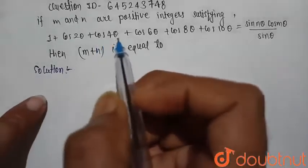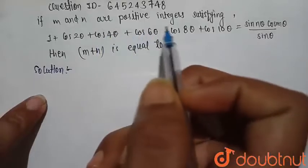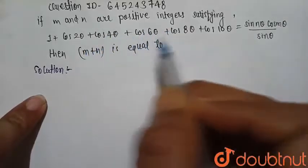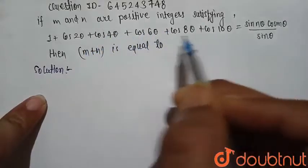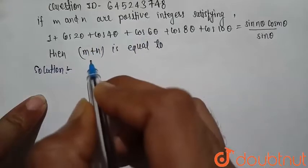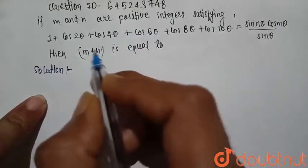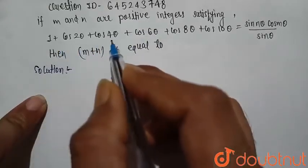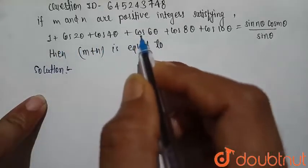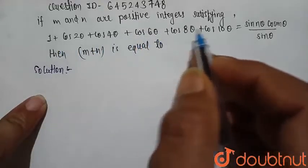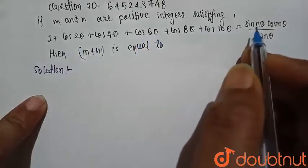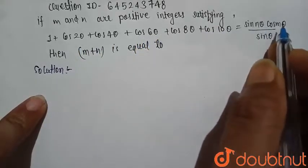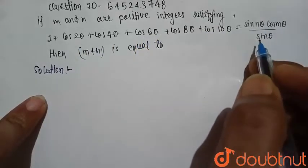If m and n are positive integers satisfying this equation, we want to find m plus n. The equation is: 1 plus cos2θ plus cos4θ plus cos6θ plus cos8θ plus cos10θ, and this is equal to sin(nθ)cos(mθ) divided by sinθ.